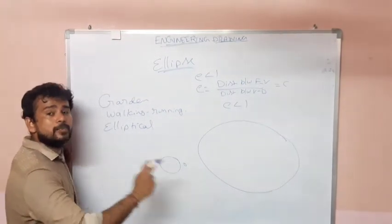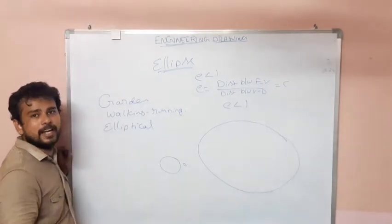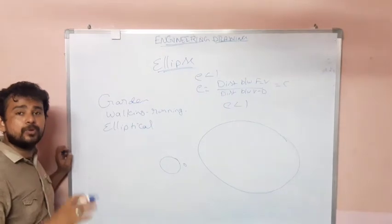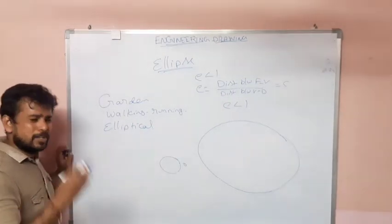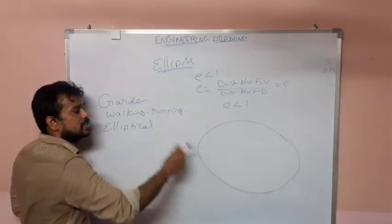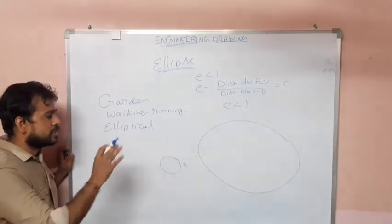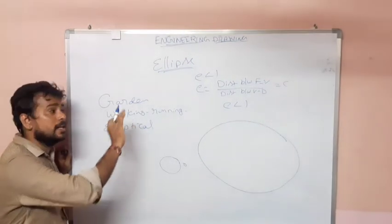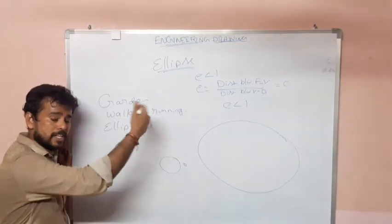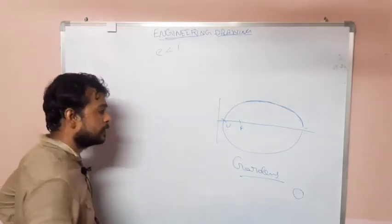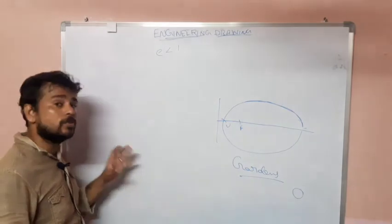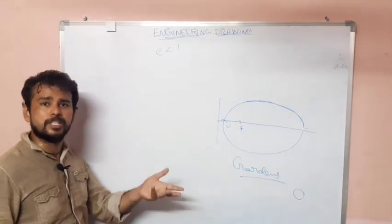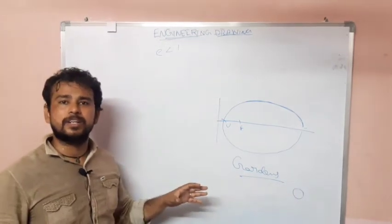So the ellipse is the most important thing. The ellipse has practical applications. If we do an elliptical application, we will draw it using different methods in the next class. When we draw the ellipse in the drawing sheet, there are different processes and methods. We use these methods as problems. We also draw elliptical conic sections using different types of methods.